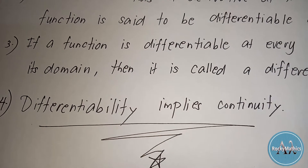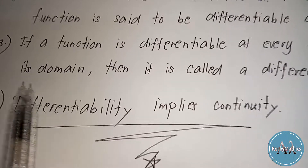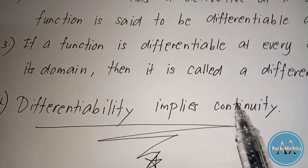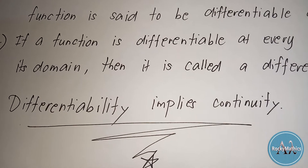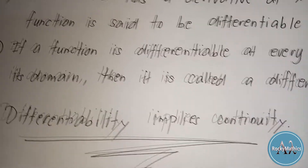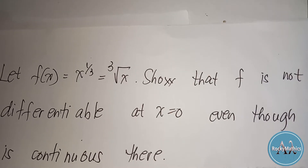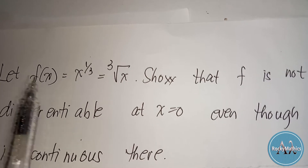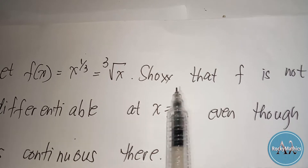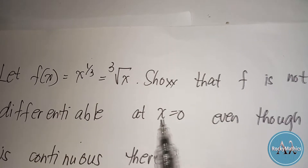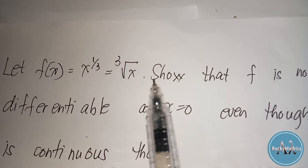In our previous discussion, one of the important remarks we tackled in relation to differentiability was: differentiability implies continuity. This means that all differentiable functions are continuous, but not all continuous functions are differentiable. To illustrate this, we have an example: let f(x) = x raised to one-third, which is equal to the cube root of x. We need to show that f is not differentiable at x = 0.